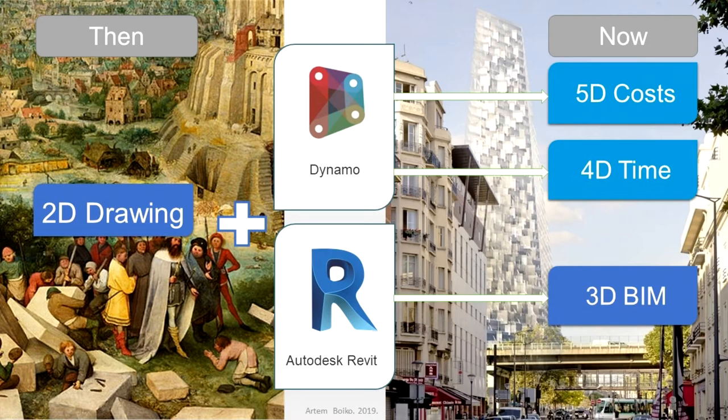But there is Dynamo. Dynamo is an add-on to Revit developed by the open source community. It is a tool that allows you to work on all the data, objects and their properties in Autodesk Revit.